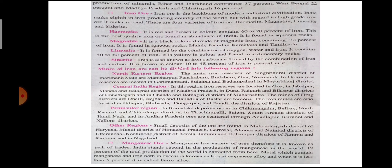In the northeastern region, the main iron ore reserves in Singhbhumi district of Jharkhand are at Manoharpur, Pasraburu, Budaburu, Gua and Noamundi. In Odisha, reserves are located at Guru Mahisani, Salipat, Badam Pahari in Mayurbhanj district.